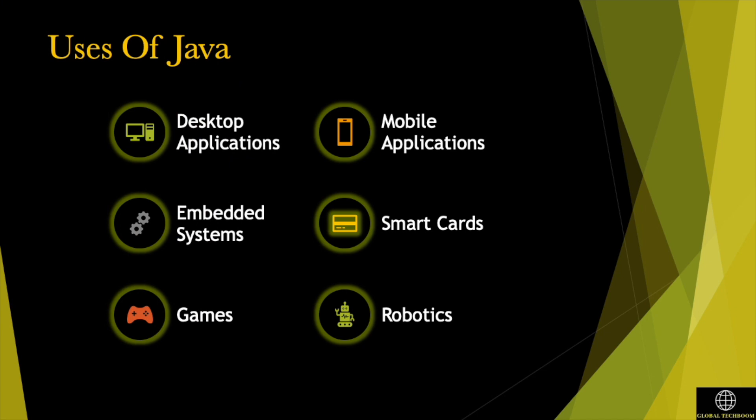Desktop applications can be easily developed using Java. We can use APIs like AWT and Swing to build these applications. A mobile application is an application created for mobile phones and tablets. In today's world, the majority of phones and smart devices have the Android operating system. Android development is not possible without Java. Java Micro Edition is used to build applications that run across all feature phones and smartphones.